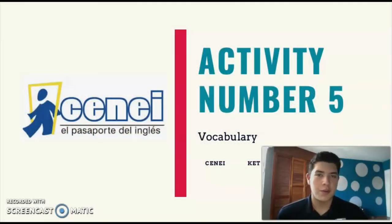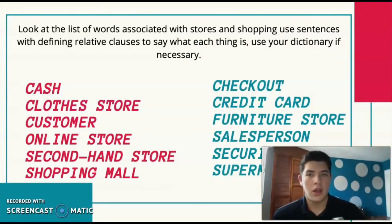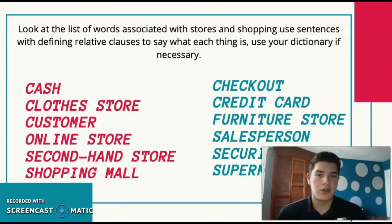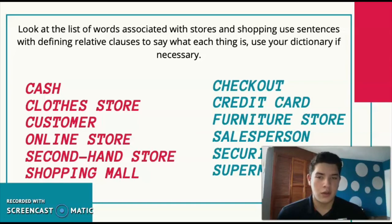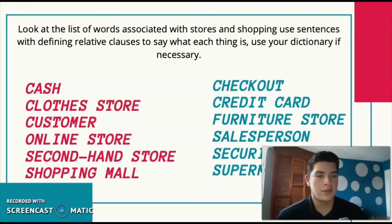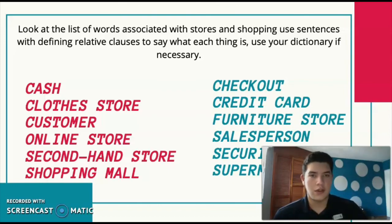Hey guys, this is activity number five and we'll see some vocabulary. Look at the list of words associated with stores and shopping. Use sentences with defining relative clauses to say what each thing is — use your dictionary if necessary. The words are: cash, clothes store, customer, online store, second-hand store, shopping mall, checkout, credit card, furniture store, salesperson, security guard, and supermarket. I'm going to add a little photo above each word so you can understand them better.